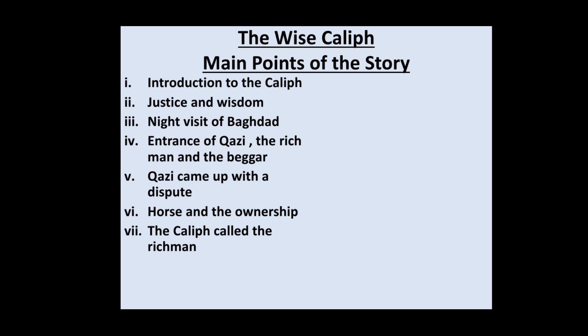The Caliph called the rich man first. The rich man said that he was going to the city gate riding this beautiful horse when he encountered the beggar on the road. The beggar, who was lame, begged him to let him ride up to the city gate. He felt sorry for the beggar and allowed him onto the horse. But when they reached the city gate, the beggar refused to come down and told the rich man not to claim the horse as his.